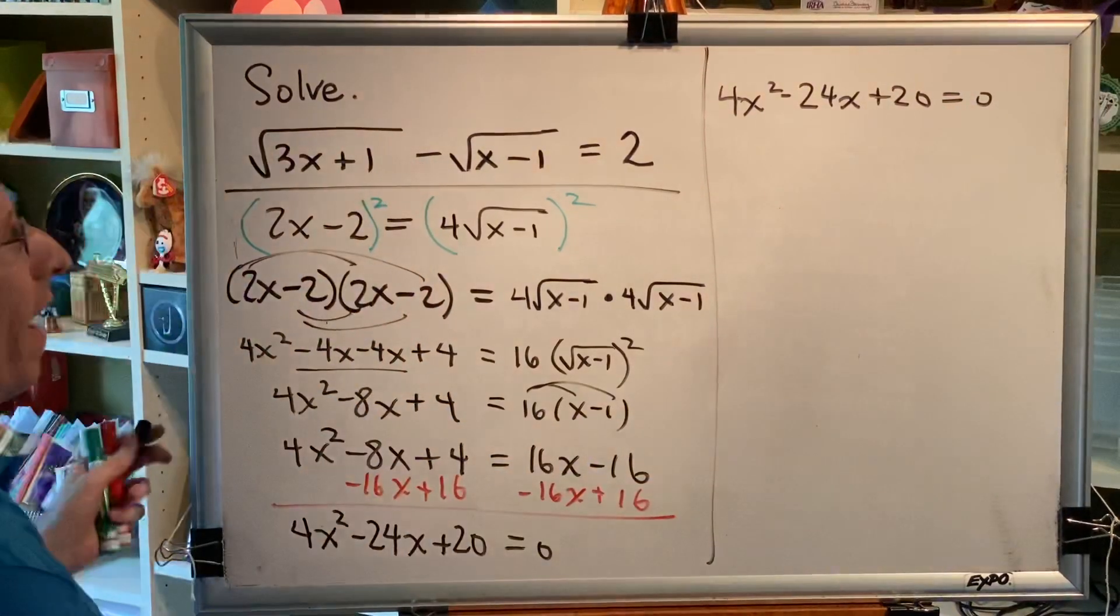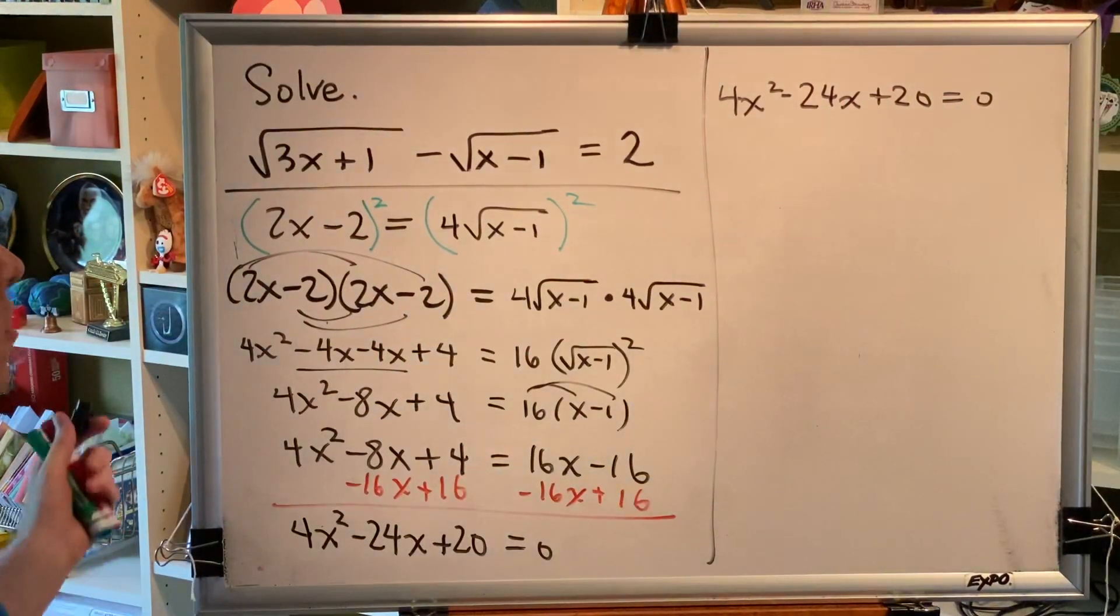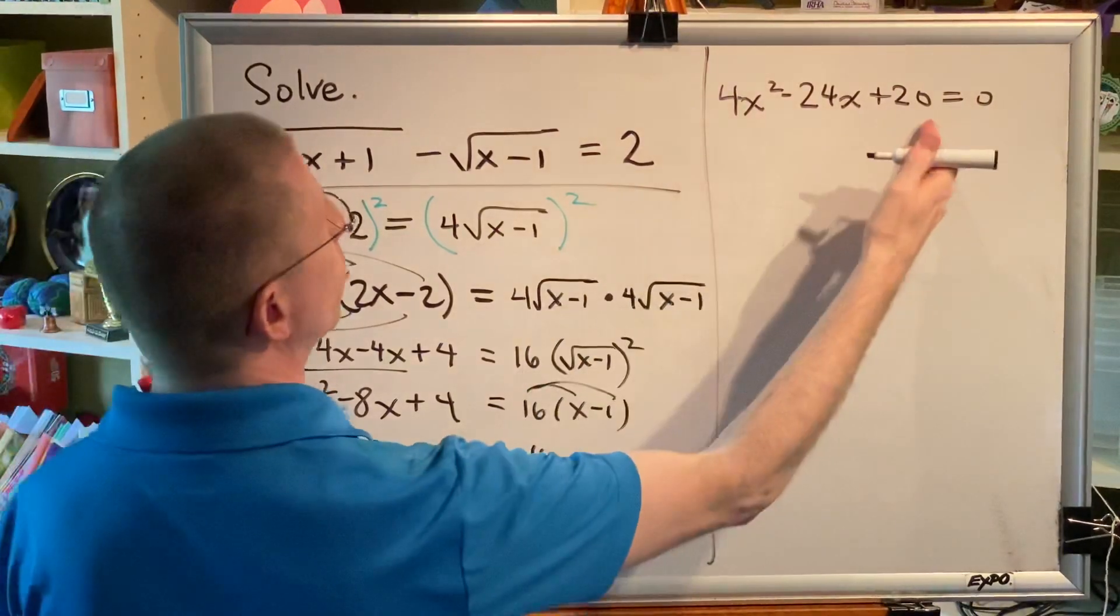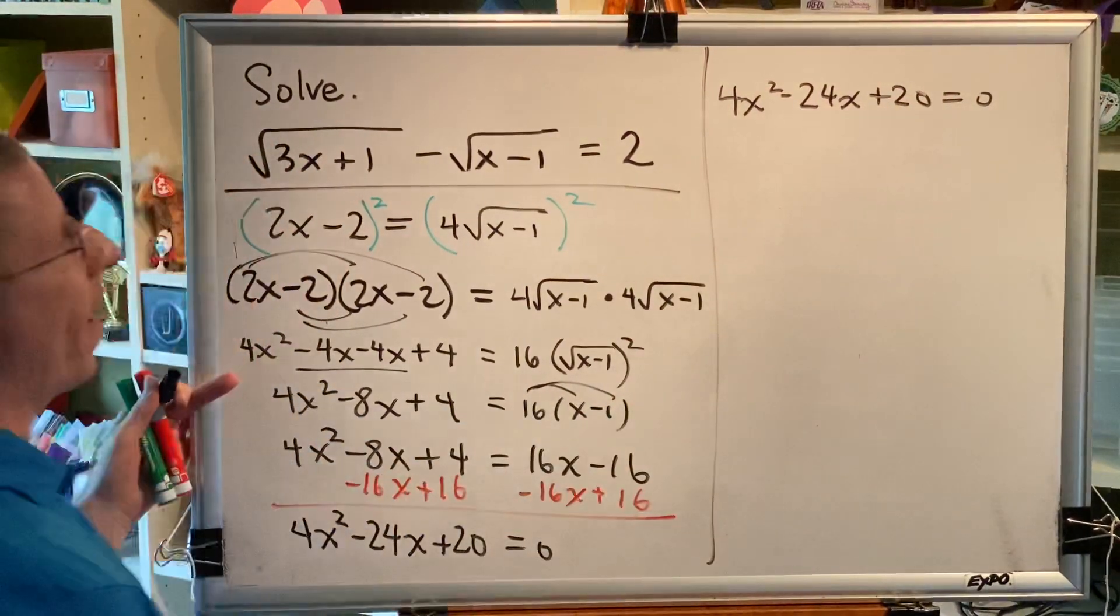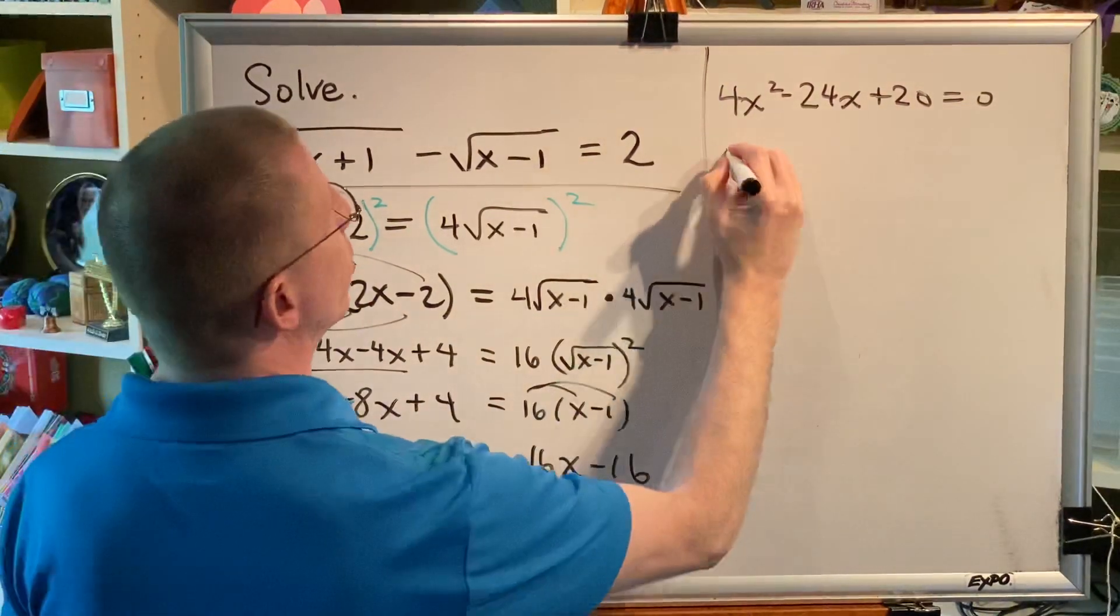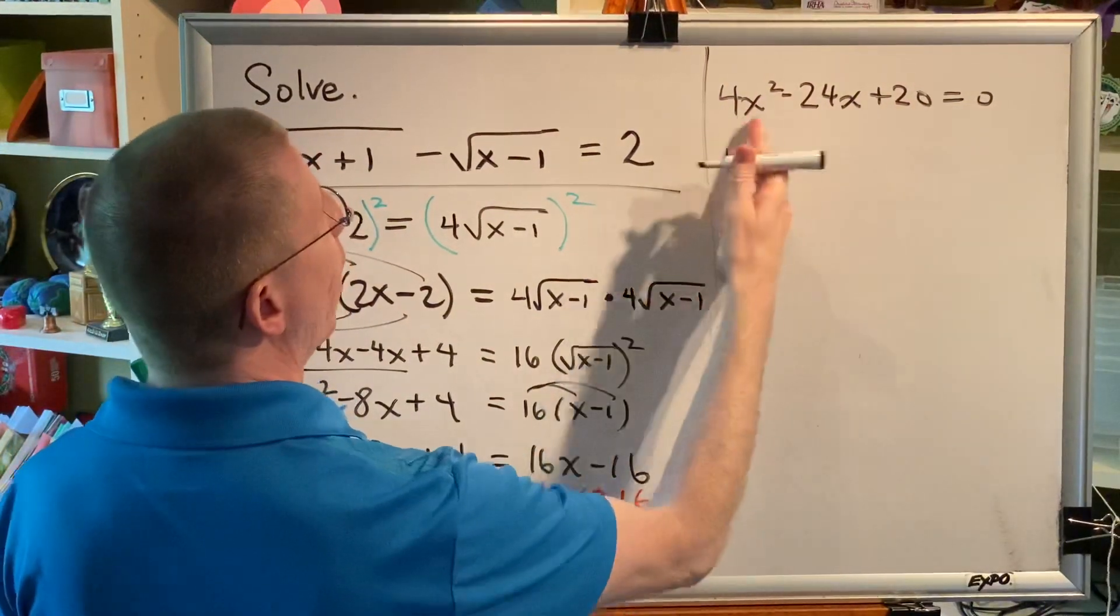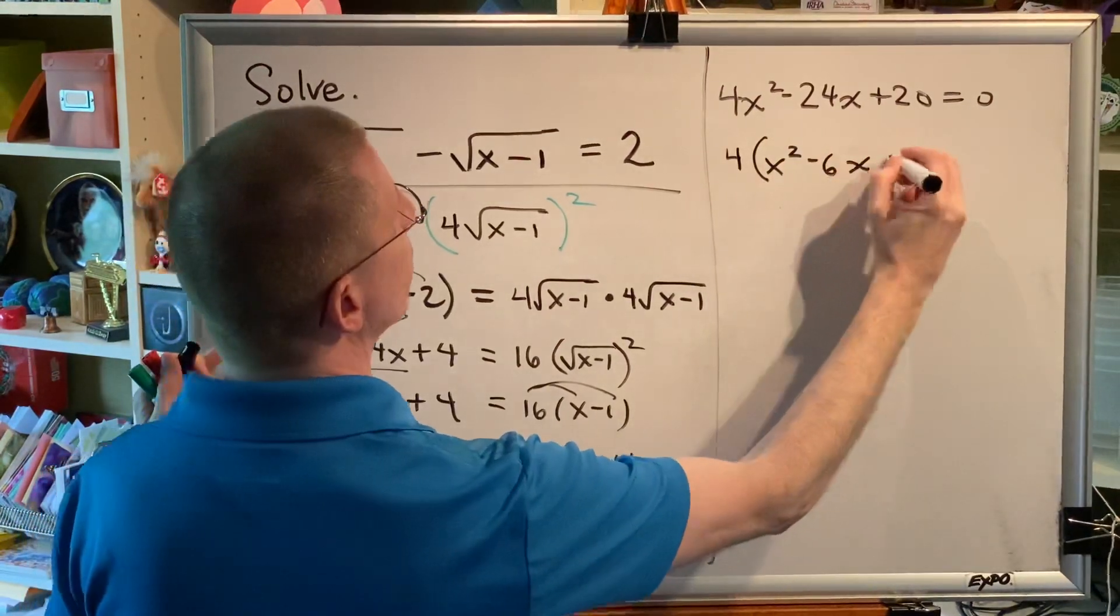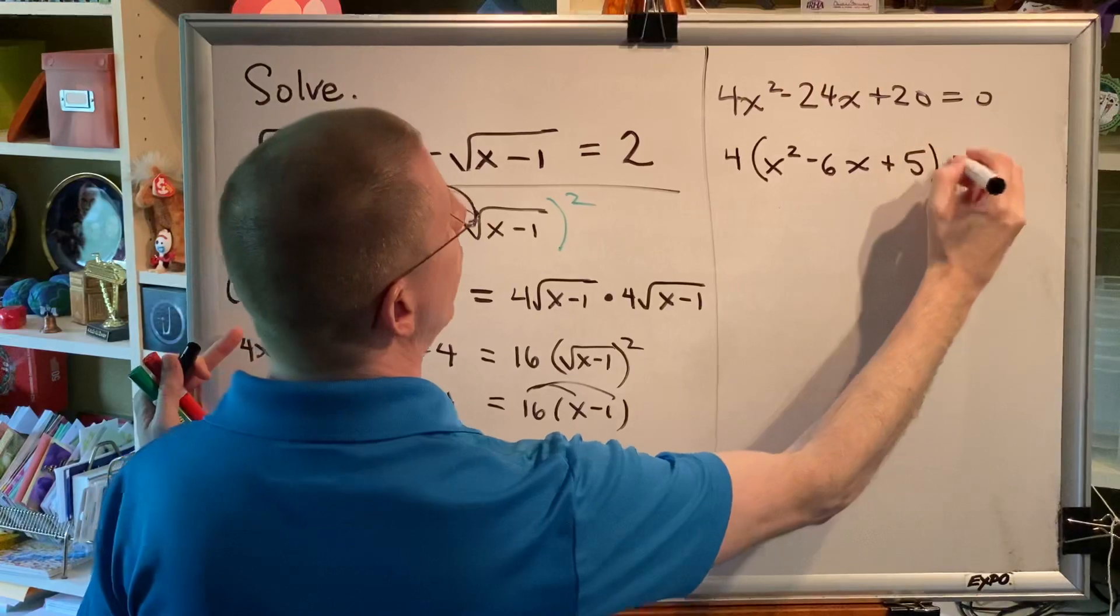4x squared minus 24x plus 20 equals 0. We're going to solve this by factoring, just as we have in the previous videos. The first step of factoring is to put your terms in descending order, which we have done. The second step of factoring is to identify and factor out your GCF, which is 4. So let's take out that 4. Divide each term by 4. You get x squared minus 6x plus 5 equals 0.